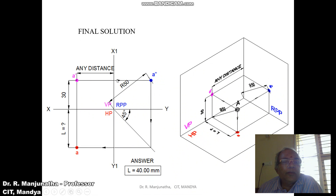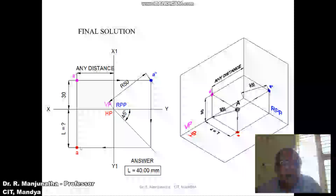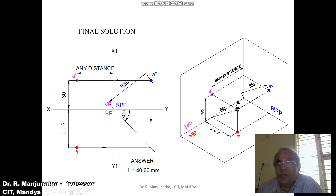From A dash, draw a horizontal projector to the profile view. The shortest distance can be seen in the profile view. By using the compass, measure a distance of 50 mm from the origin and cut an arc on the horizontal projector drawn from A dash in the profile view. Mark this point as A double dash. Then draw a 45-degree thin line adjacent to HP using the compass. Draw a vertical projector from A double dash to the 45-degree line — the distance in front of VP, which was horizontal, is transferred to the vertical distance. From this point draw a horizontal projector to HP, and from A dash draw a vertical projector to HP; both will intersect at small a.